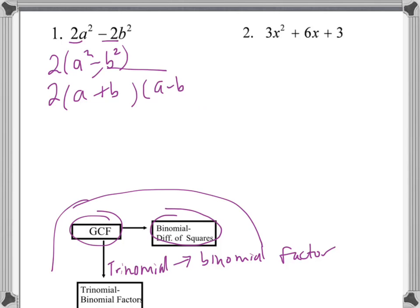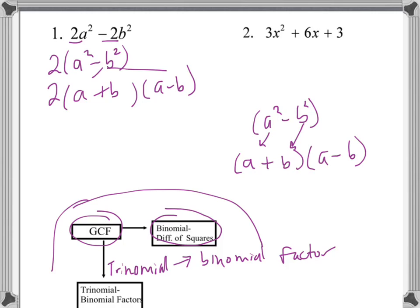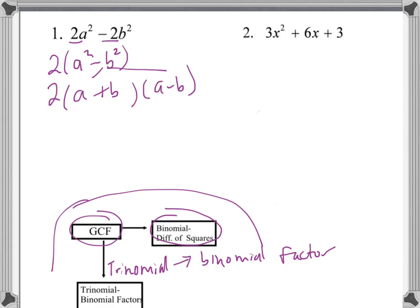We learned that a couple of lessons ago. If we just had a² minus b², we take the square root of the first term, which is a, and we do plus the square root of the second term, which is b; then we do the same terms but with subtraction. The list of factors making up 2a² minus 2b² is 2 times (a + b) times (a − b).